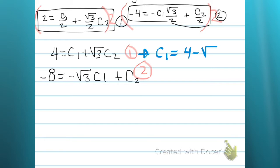So I'm going to go ahead and I'm going to use substitution. I'm solving equation 1 for c1. Now I'm plugging it into equation 2. Everywhere I see a c1, I put 4 minus root 3 c2. We distribute in and we clean up.